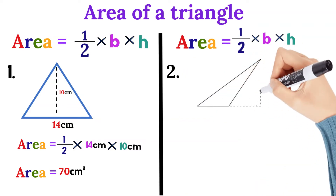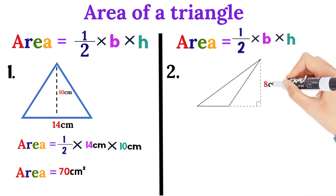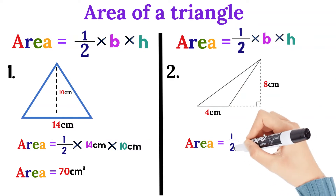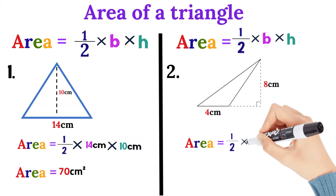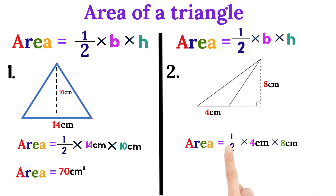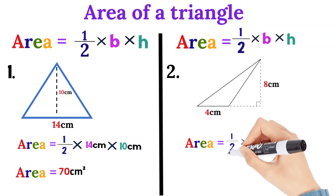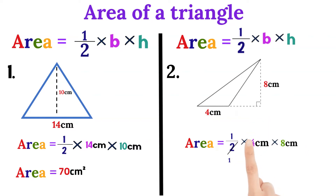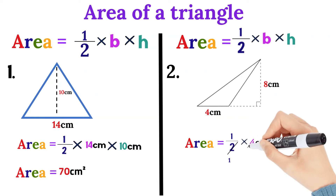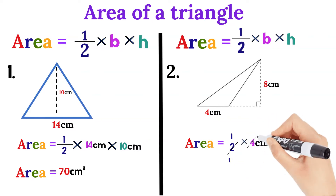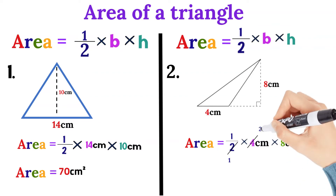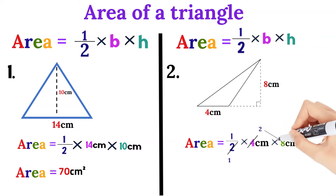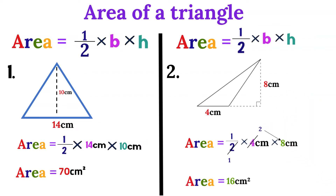Number two: the base is 4 cm and the height is 8 cm. So half of 4 cm — two cancels itself to 1, two cancels 4 to give 2. So 2 times 8 gives us 16 cm squared.